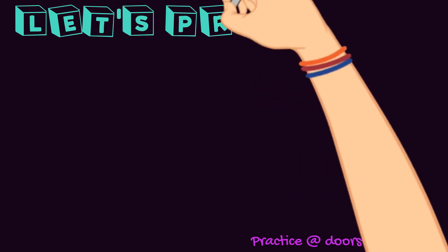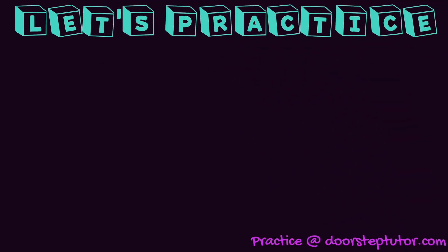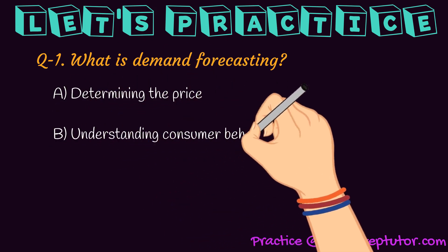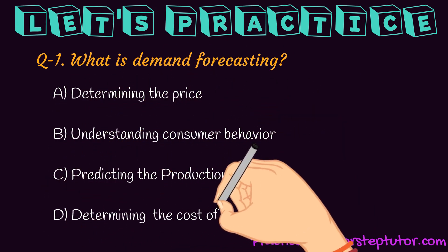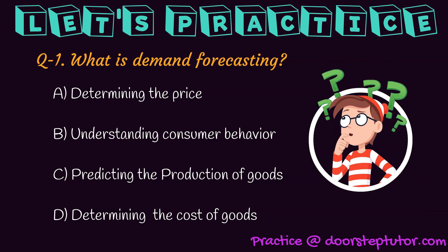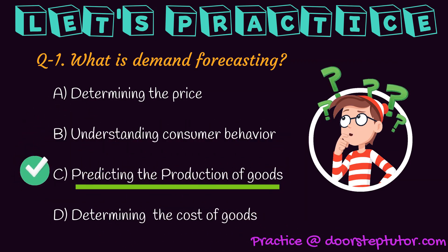Now let us discuss some important questions related to this topic. The first one is: what is demand forecasting? Options are: A. Determining the price, B. Understanding consumer behavior, C. Predicting the production of goods, D. Determining the cost of goods. Since demand forecasting is concerned with predicting the demand of a product, the correct answer is C — predicting the production of goods.